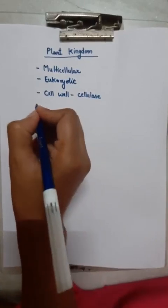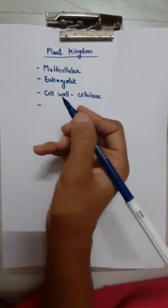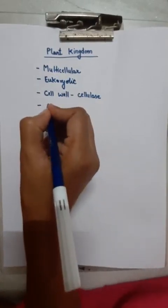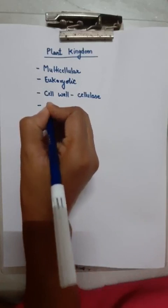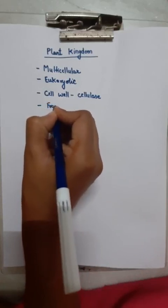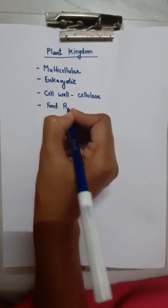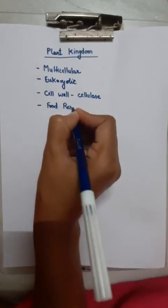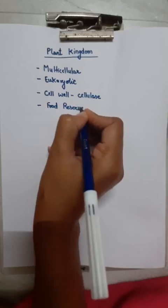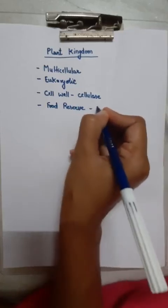A central vacuole is present. The reserve food is stored in the form of starch.